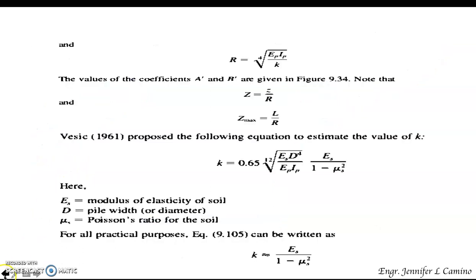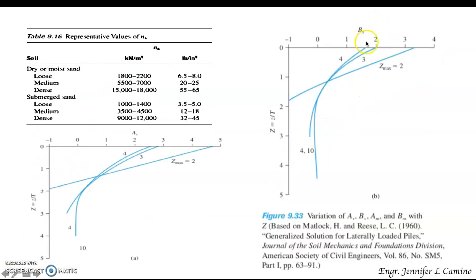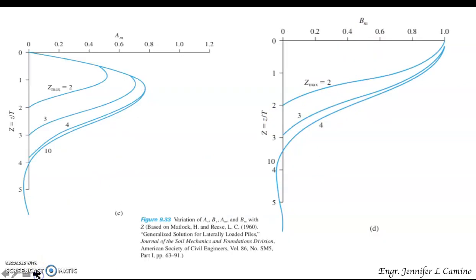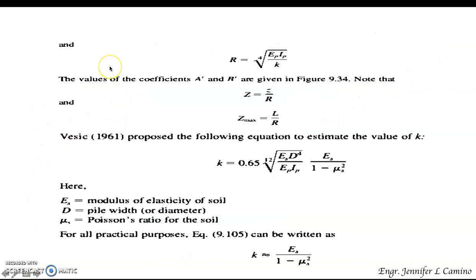From this figure you get the value for b_x — you just need the value for capital Z, which equals small z divided by t, and Z_sub_max which is equivalent to t. Having those values you can get b_x. Similarly, this figure gives you a_m and this one gives b_m.